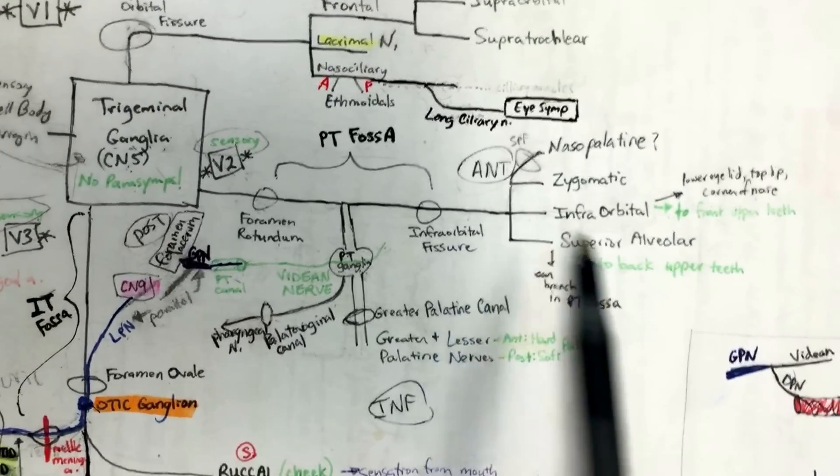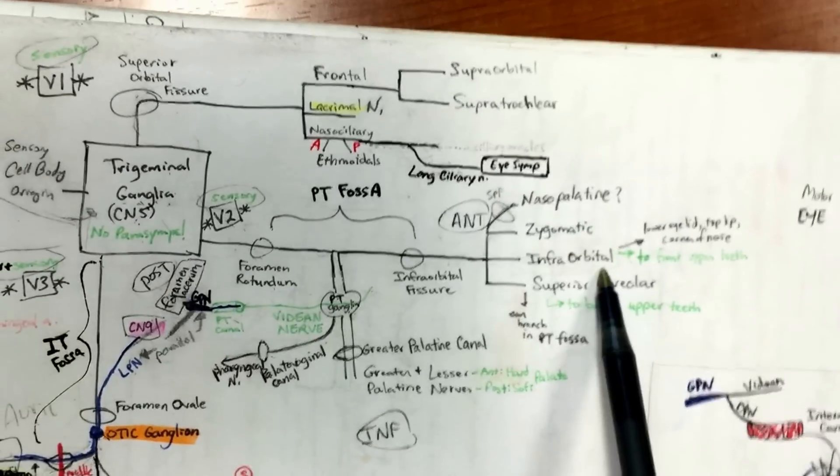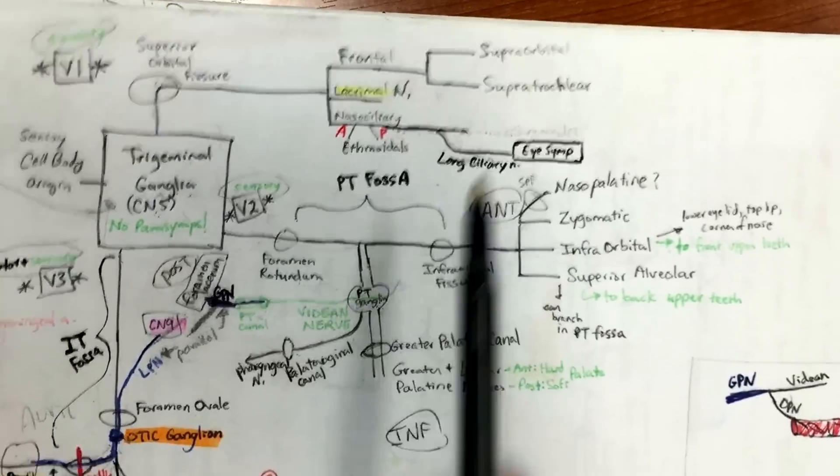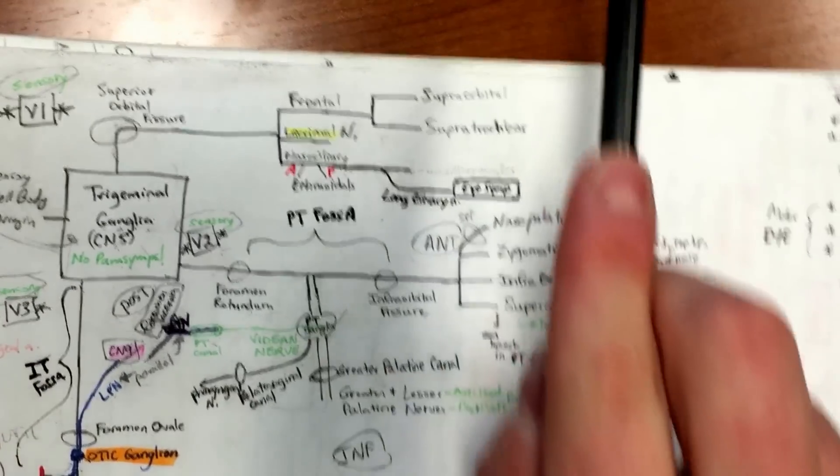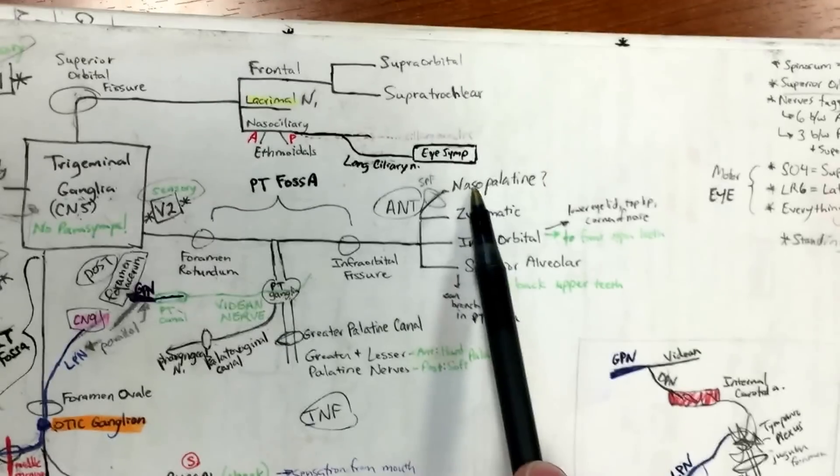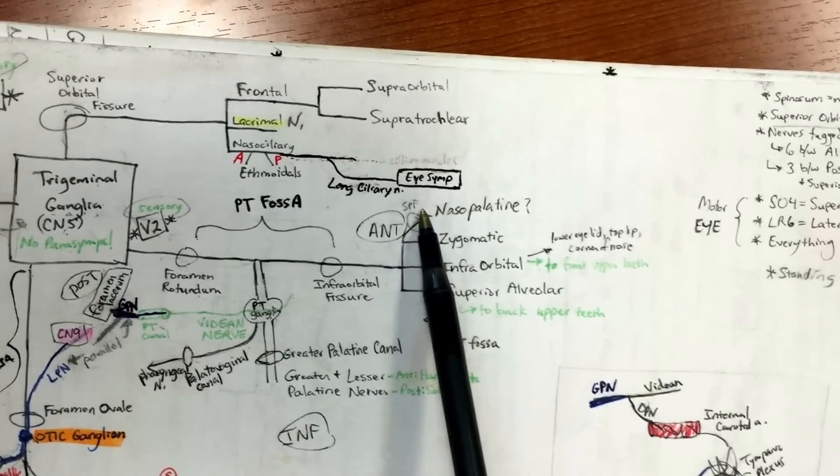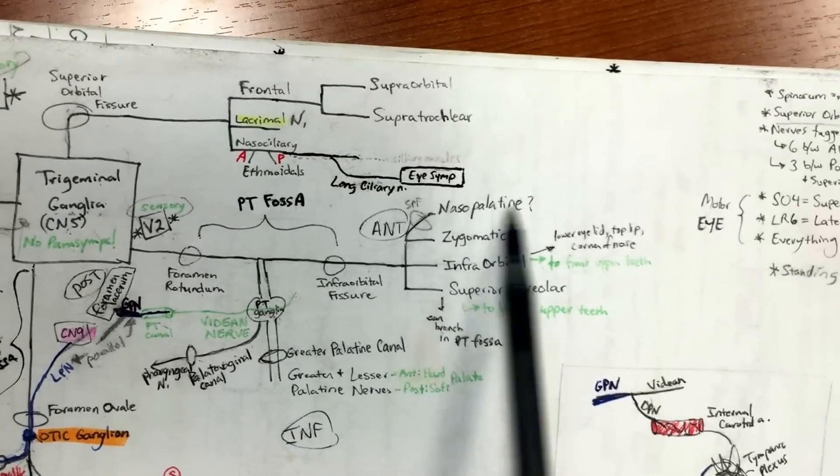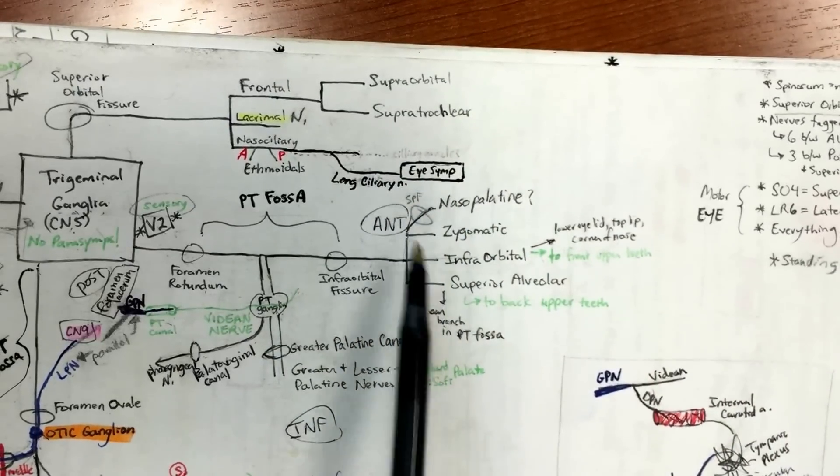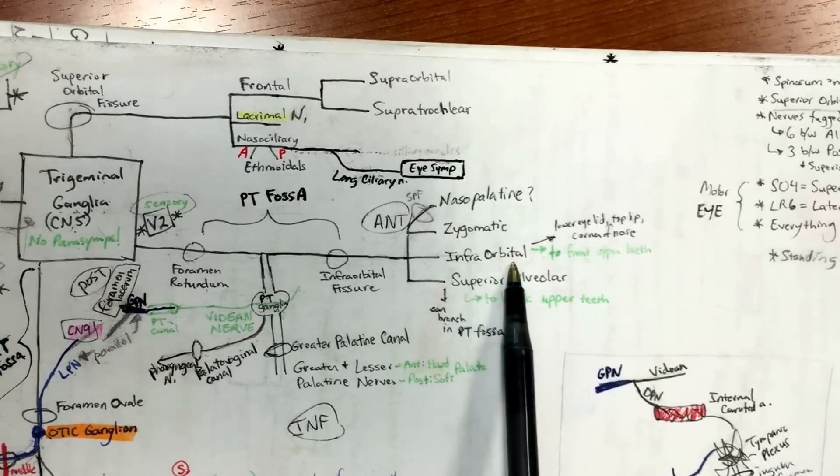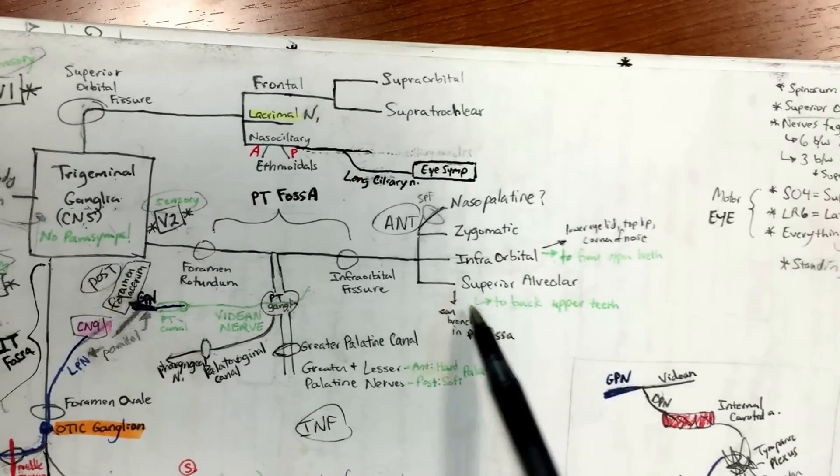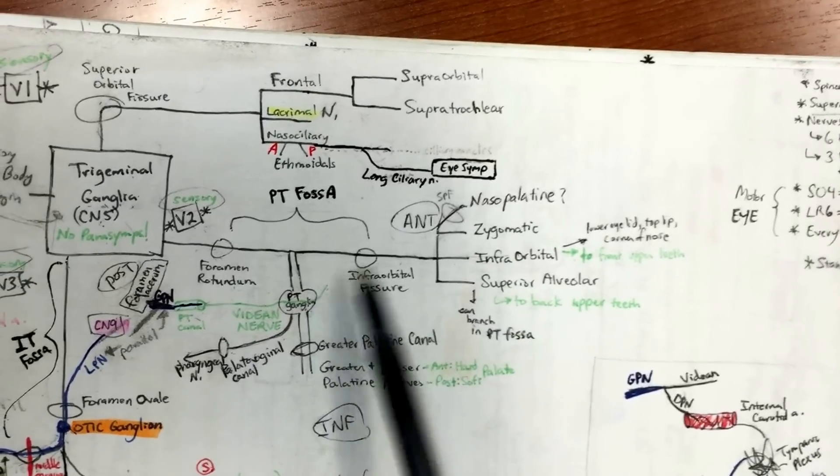What comes out of infraorbital fissure as you're moving anteriorly? You have zygomatic and infraorbital, and then nasopalatine. If you go superior in the chicken bucket, you'll have your nasopalatine nerves, and those are going through the sphenopalatine foramen. Infraorbital comes out and does your lower eyelid, top of your lip, corner of your nose, and then superior alveolar.